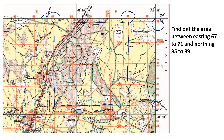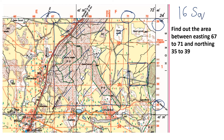Now, one grid — we know that one grid is 2 centimeter by 2 centimeter, which is one square kilometer. So if one grid is one square kilometer, how many grids are we covering? Counting: 1, 2, 3, 4, 5, 6, 7, 8, 9, 10, 11, 12, 13, 14, 15, and 16. So our answer is 16 square kilometers.